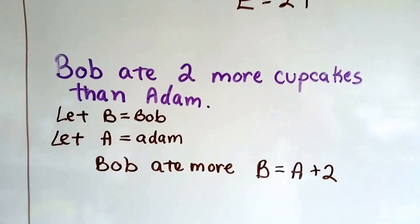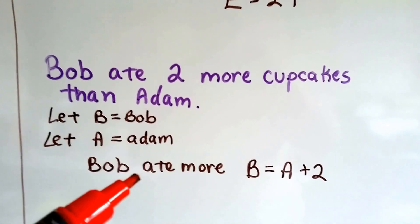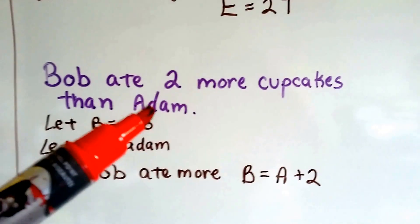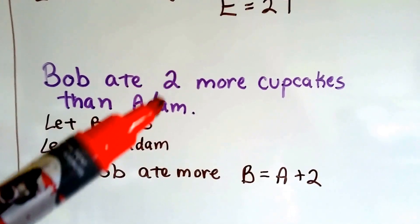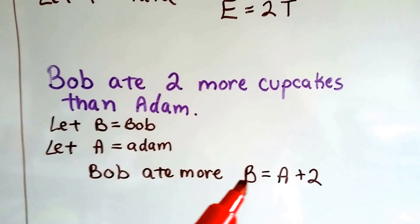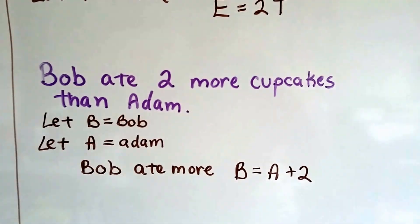Let's try this one. Bob ate 2 more cupcakes than Adam. Well, Bob ate more, right? So if he ate 2 more than Adam, whatever Adam ate, just add 2 to that and that's what Bob ate. So Adam plus 2 is equal to Bob. And we let the B be Bob and the A be Adam to help us keep track.